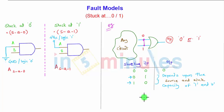And finally, if the shorting inputs are one, one, the output will be one. But the important point is here, between these two inputs, the output can be one or zero. It depends upon the source and sink capability of the zeros and ones which are shorting.